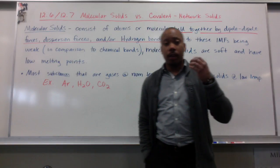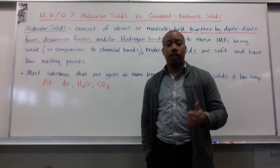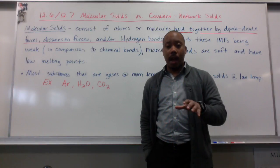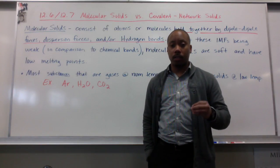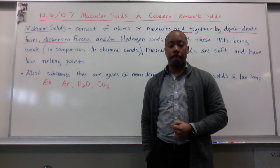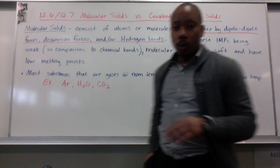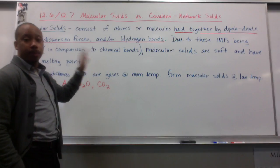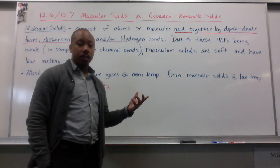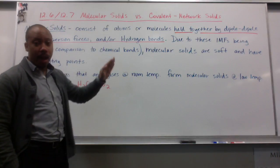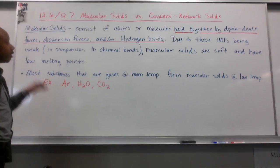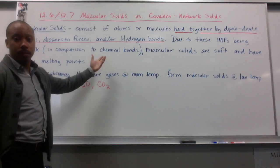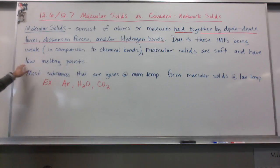We already introduced the four classes of solids — we've gone over ionic solids and metallic solids. We took a break to talk about intermolecular forces, and now we're going to talk about molecular solids and covalent network solids in the scope of intermolecular forces. A molecular solid consists of atoms or molecules held together by dipole-dipole attractions, dispersion forces, and/or hydrogen bonds. Because these intermolecular forces are very weak compared to covalent bonds, molecular solids are soft and have low melting points.